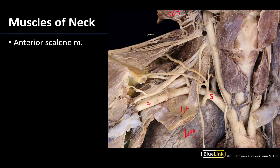The anterior scalene — which is this muscle here that I'm outlining — is going to subdivide the subclavian artery into three parts based on its relationship with the anterior scalene. The portion medial to the anterior scalene is the first part. The second part is deep to the anterior scalene, so we can't see it here. The third part is lateral to the anterior scalene. Once it passes the first rib region, the name changes to the axillary artery. A lot of times when you hear about the anterior scalene, you mainly hear about it in its relationship with the subclavian artery.